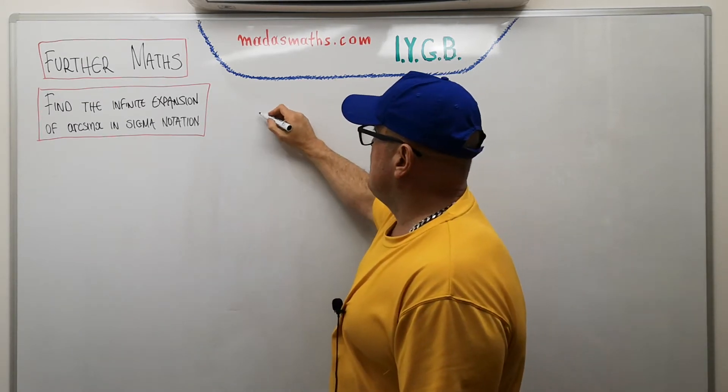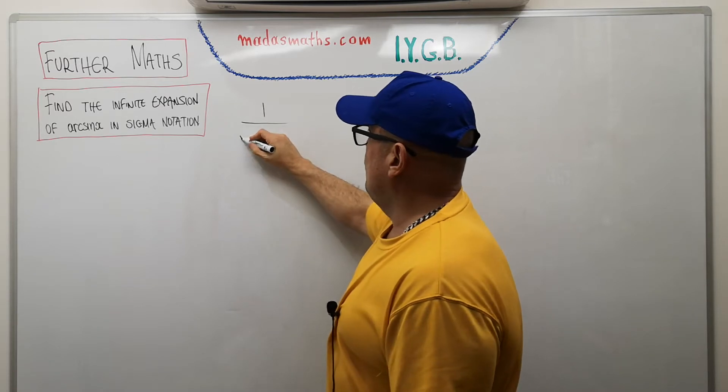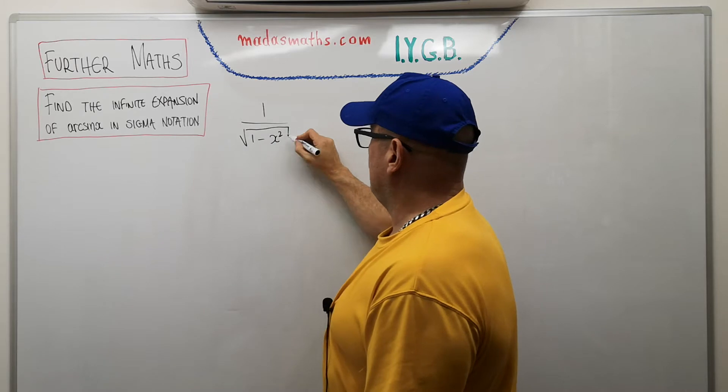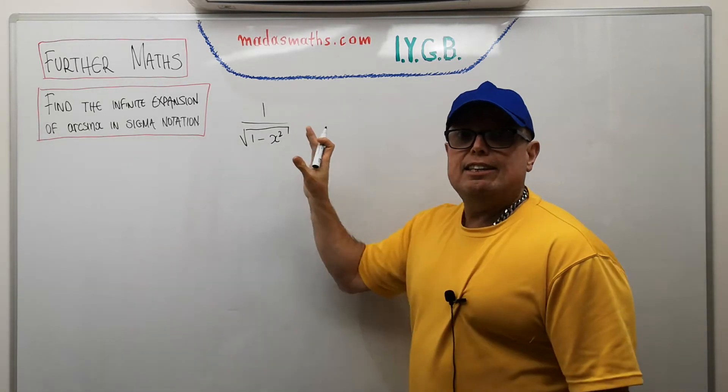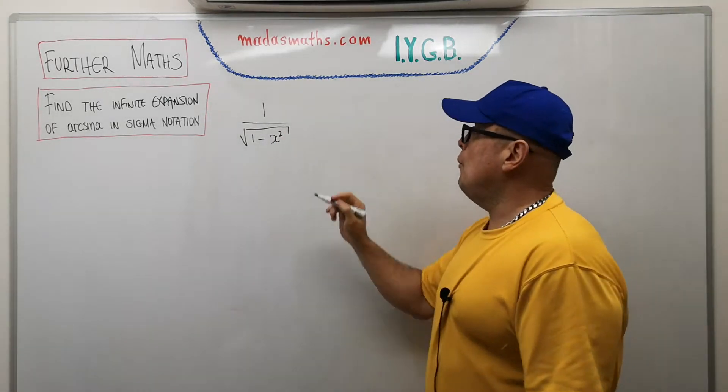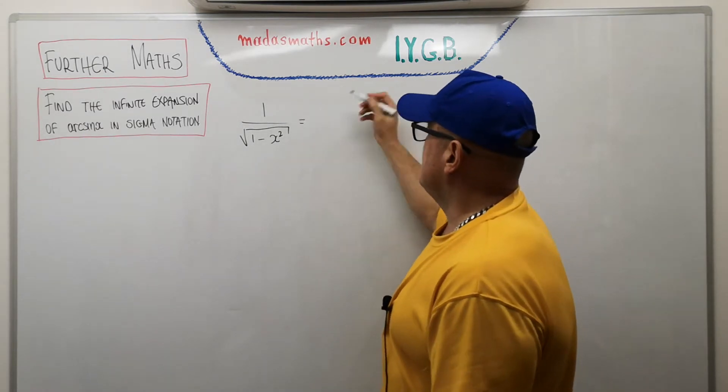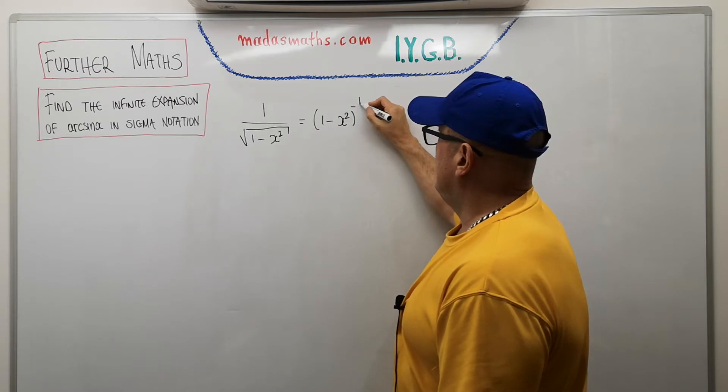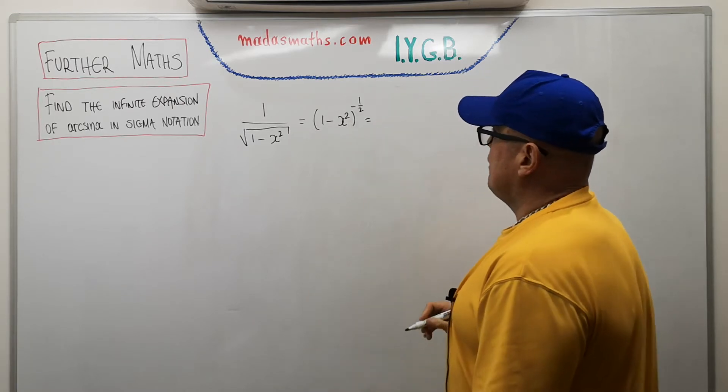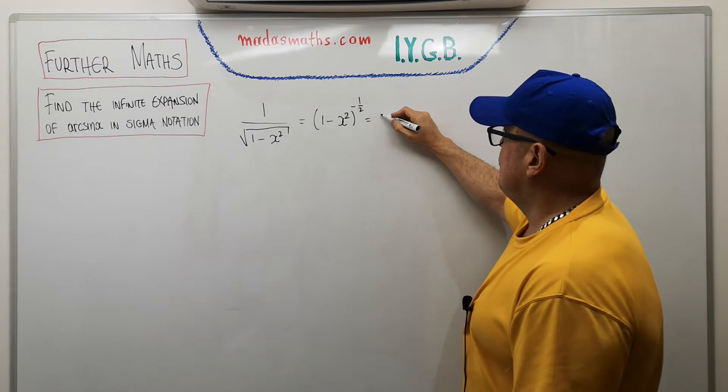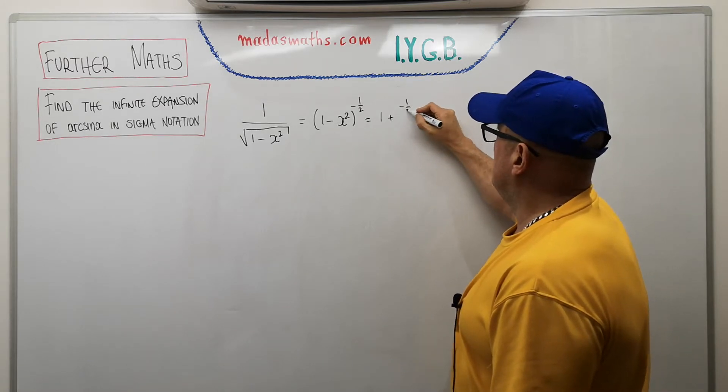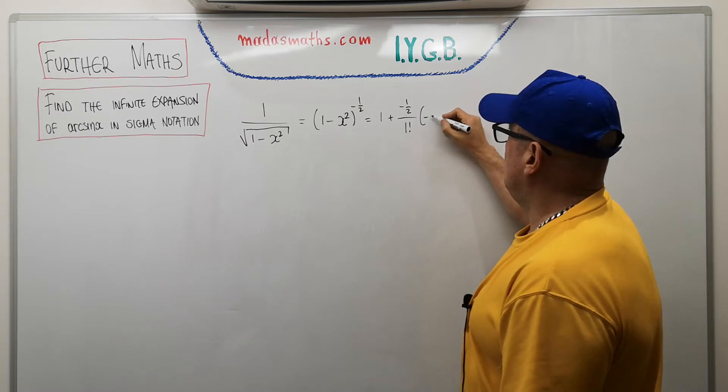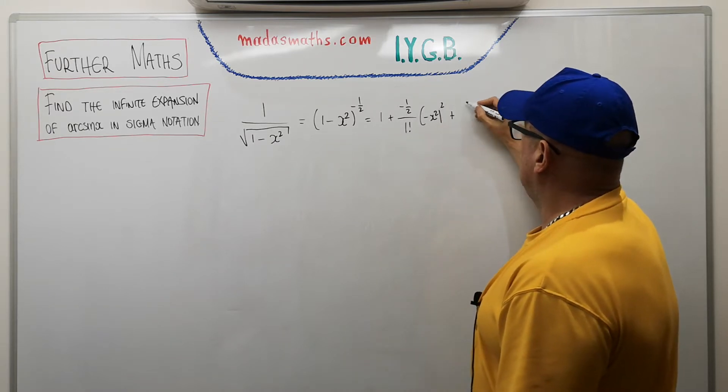So this is how we're going to obtain this particular expansion. We're going to start with a binomial expansion of 1 over the square root of 1 minus x squared, the reason being this is the differential of the arcsin. So we're going to say, okay, just a standard binomial, let's rewrite it perhaps as